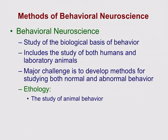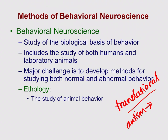Behavioral neuroscience looks at the biological basis of behavior in both humans and lab animals. A challenge is developing translational methods — if we develop an animal model of, say, autism, it has to translate from animal to human. Some models are better than others. For example, we have a model of fetal alcohol spectrum disorder in rats that is very translatable to humans, but models for conditions like autism — which involve very specific social issues — are much harder to make translatable.